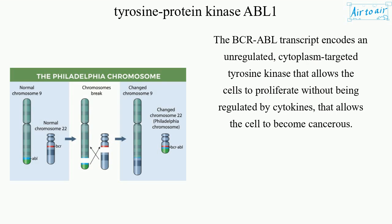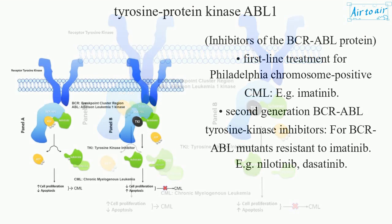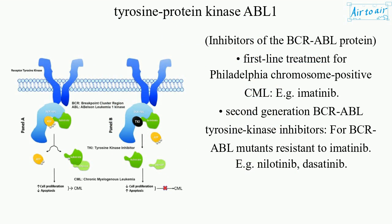The BCR-ABL transcript encodes an unregulated cytoplasm-targeted tyrosine kinase that allows the cells to proliferate without being regulated by cytokines, allowing the cell to become cancerous. Inhibitors of the BCR-ABL protein are the first-line treatment for Philadelphia chromosome positive CML — e.g. imatinib. Second-generation BCR-ABL tyrosine kinase inhibitors are used for BCR-ABL mutants resistant to imatinib — e.g. nilotinib, dasatinib.